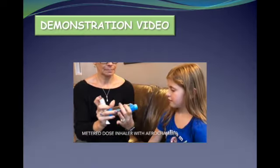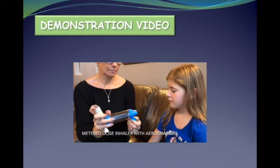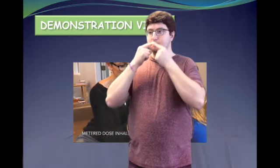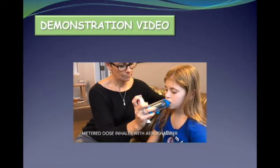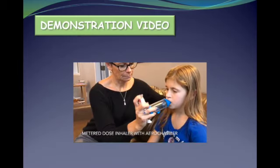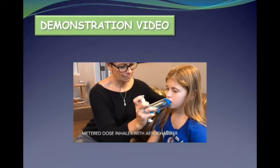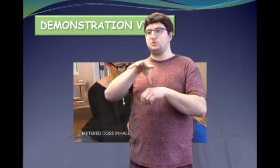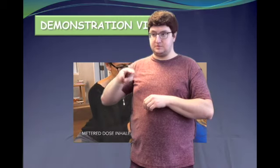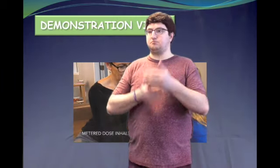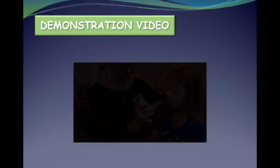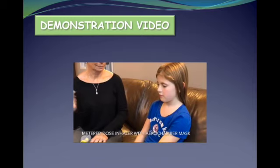Shake the inhaler and remove its cap. Insert the mouthpiece of the inhaler into the aerochamber. Place the mouthpiece of the aerochamber into the child's mouth, making sure there is a tight seal. Have the child breathe out. Push down once on the canister. Have the child breathe normally, taking 5-6 breaths. If a second dose is prescribed, repeat these steps, waiting 30 seconds between each dose.